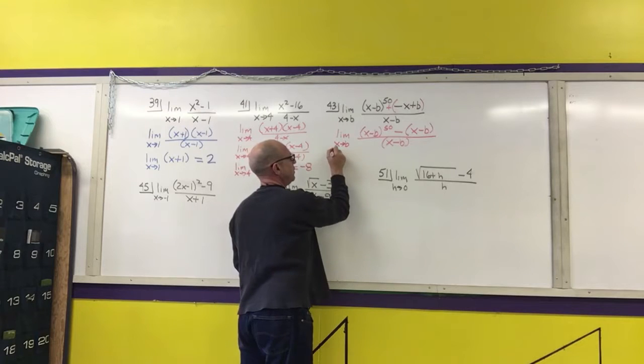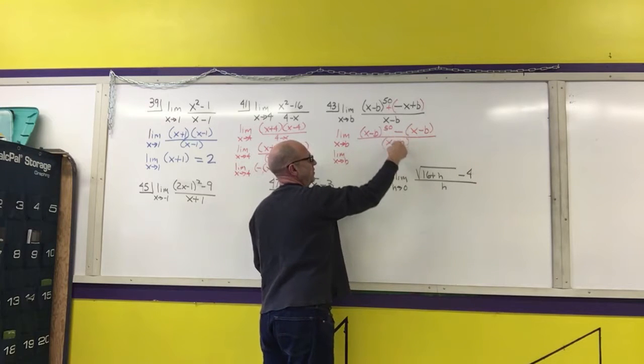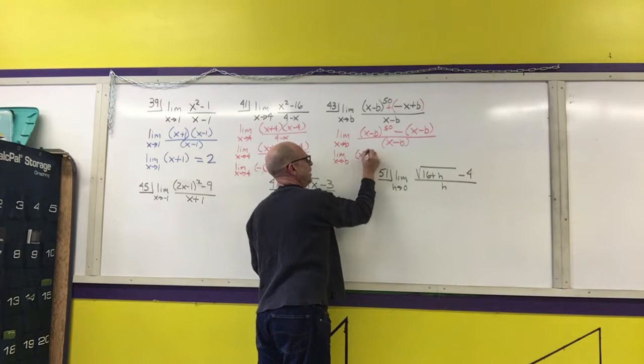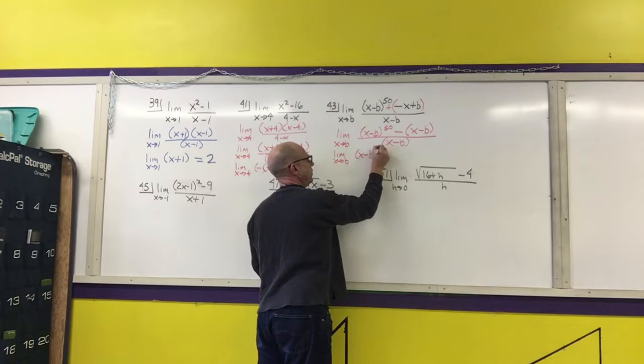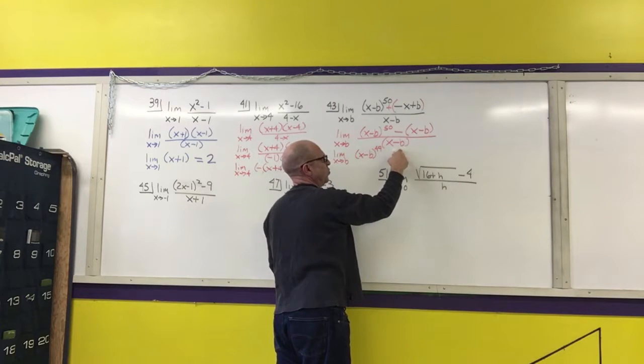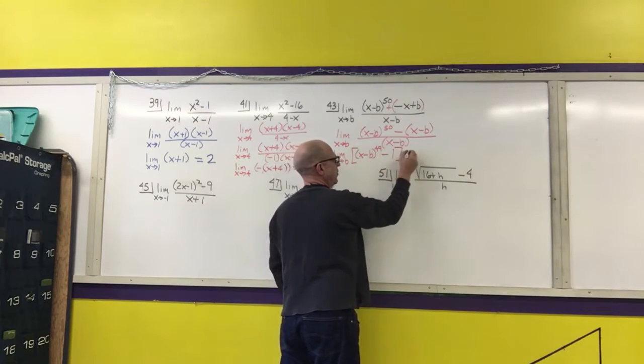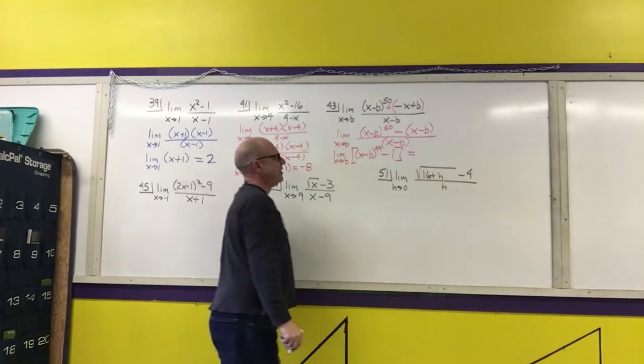Still have to keep the limit. So I have the limit as x approaches b. x minus b to the 50th divided by x minus b is x minus b to the 49th. x minus b divided by x minus b is 1, so I'm going to have a minus 1. Need a second set of brackets to compensate for the whole thing. And now I can take the limit.